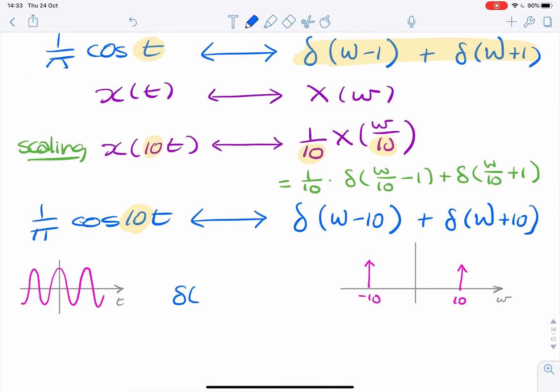So when you have a delta Dirac function, which is infinitely thin but has an area of 1, when you scale it by a factor of a, where a here is positive, if a is greater than 1, what you're doing is you're making your pulse narrower. But it's already infinitely narrow. So it can't become narrower.